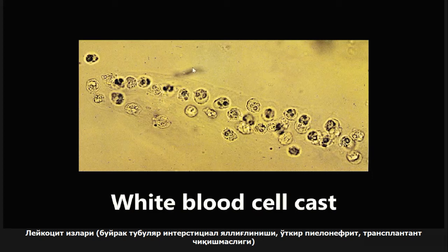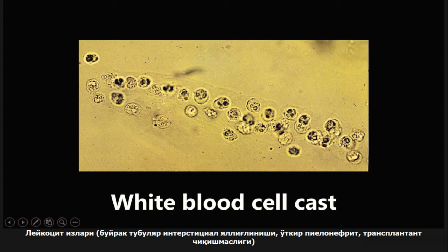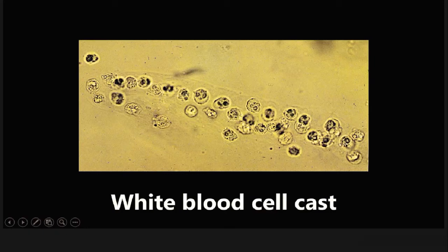They'll usually give you some type of vignette with renal pathology and give you a picture of this, asking what it is or asking you to make the diagnosis. The three main times you'll see this: tubulo-interstitial inflammation, acute pyelonephritis, and transplant rejection.